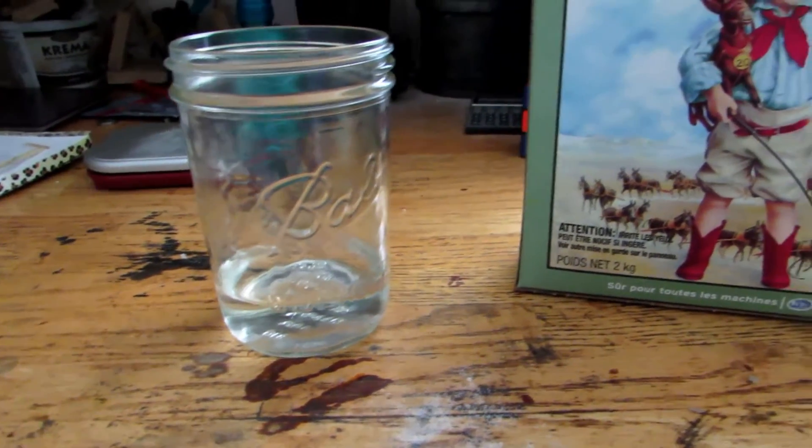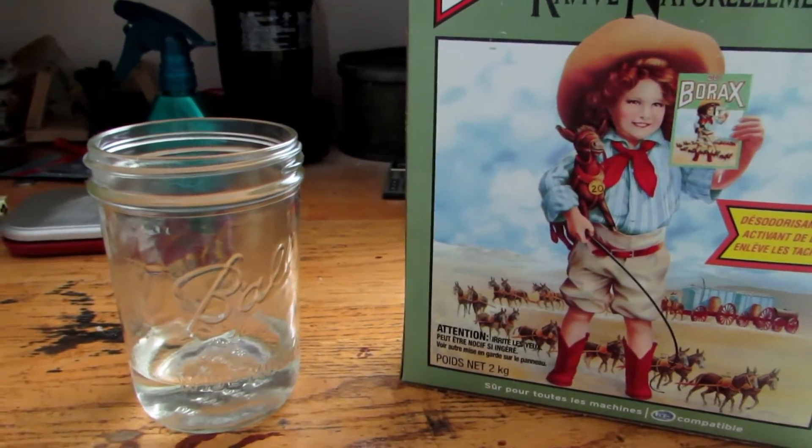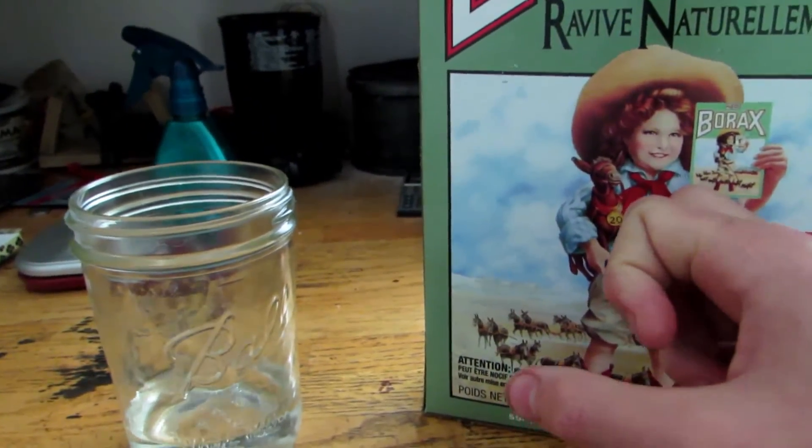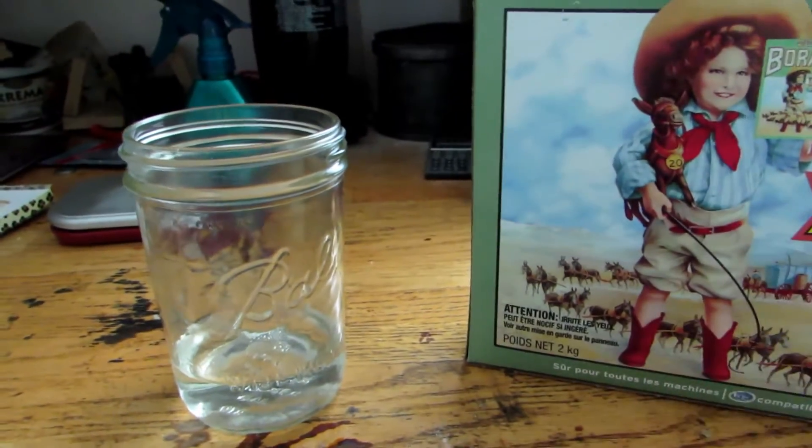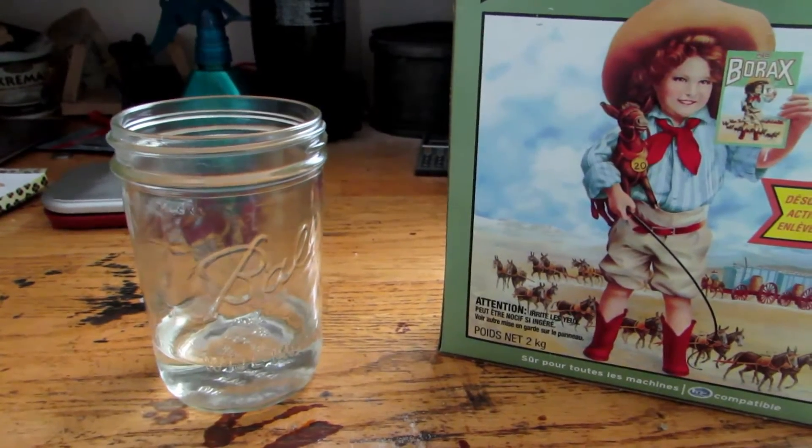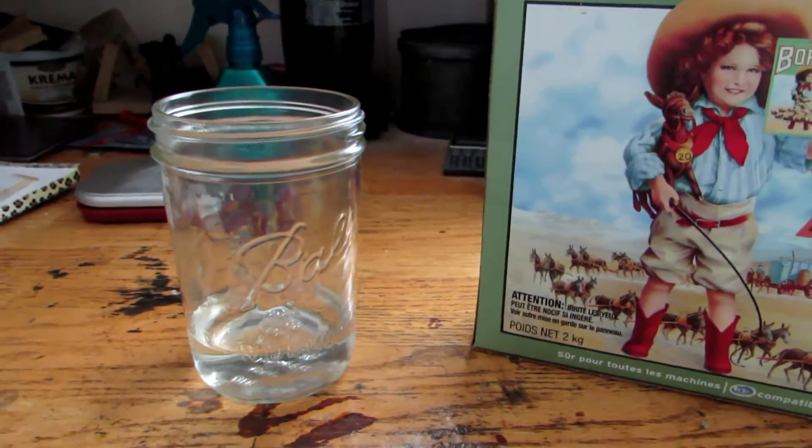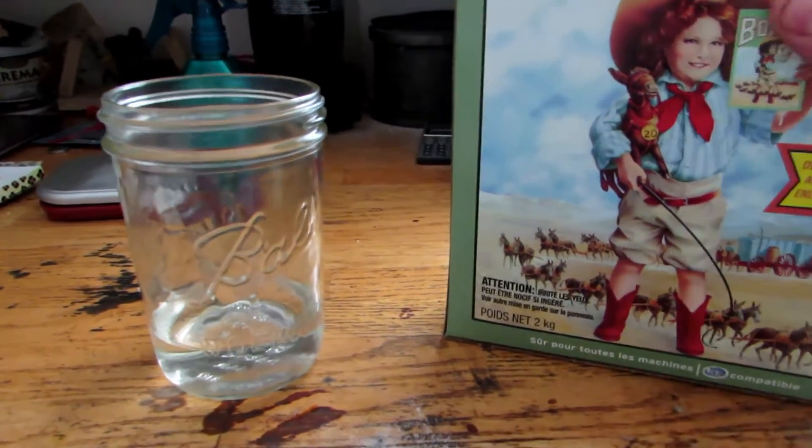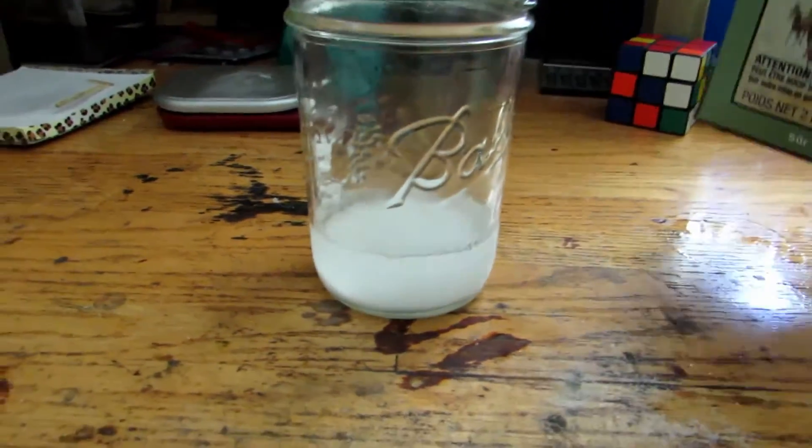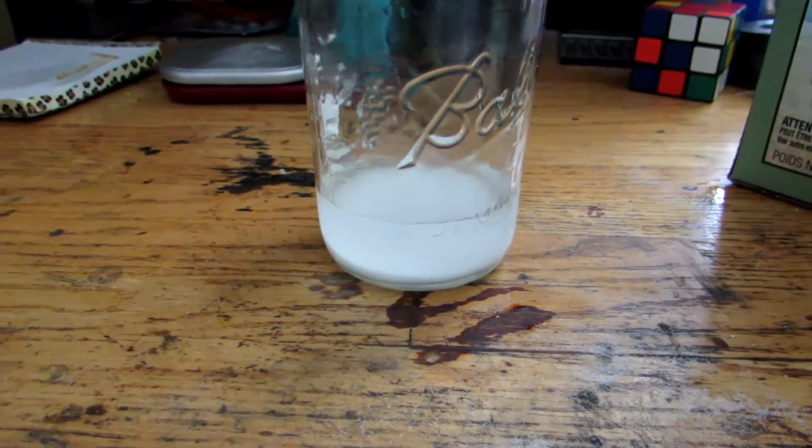First we're going to need to make boric acid. We'll need some hydrochloric acid, which can be sold as muriatic acid at Home Depot, and borax and water. First we need to create a saturated solution of borax in the water and make sure everything is dissolved. This will ensure that if any boric acid is precipitated when we add hydrochloric acid, there will be no contamination from unreacted borax crystals.